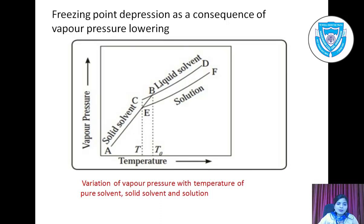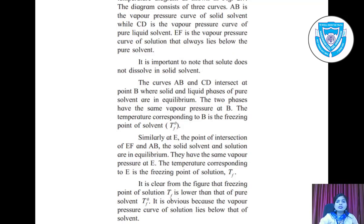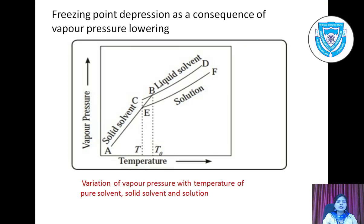Now see the freezing point depression as a consequence of vapor pressure lowering. Here you can see a vapor pressure–temperature curve, with vapor pressure on the y-axis and temperature on the x-axis. There are three curves: the cd curve, ef curve, and ab curve. AB is the vapor pressure curve of solid solvent, CD is the vapor pressure curve of pure liquid solvent, and EF is the vapor pressure curve of the solution. EF always lies below CD.